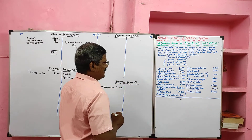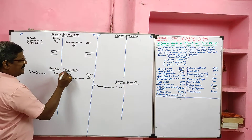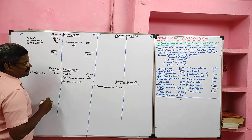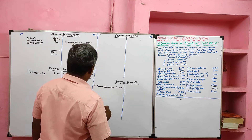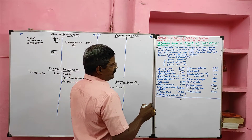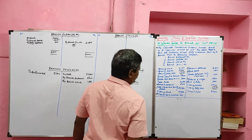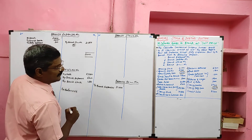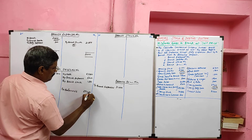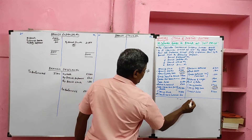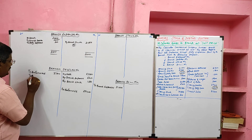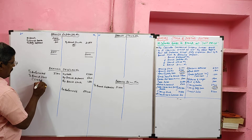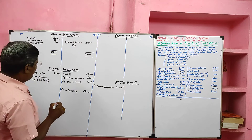Goods returned by the customer — this is called sales return — should be recorded on the credit side of the Branch Debtor Account as 'By Branch Stock Account,' value 1,500. Closing debtors are credited as 'By Balance c/d,' closing debtor value 29,400. Credit sales will be entered on the debit side of the Branch Debtor Account as 'To Branch Stock Account' — this is credit sales — value 85,200.